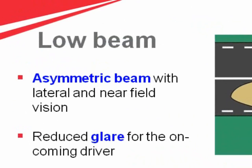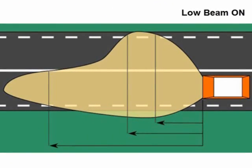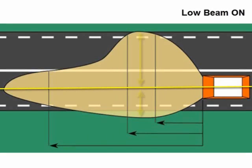Moving on to low beam. The term used here is asymmetric beam. If you observe the beam along the longitudinal axis of the vehicle, you'll see that it is not symmetric. It has some additional spread on the right hand side, and on the left it has additional reach.